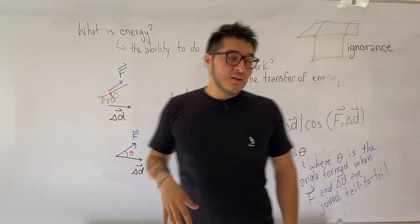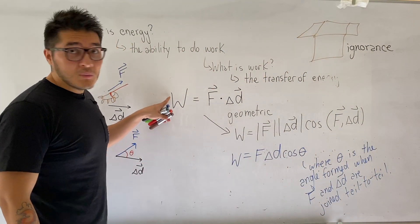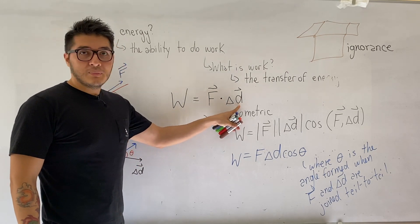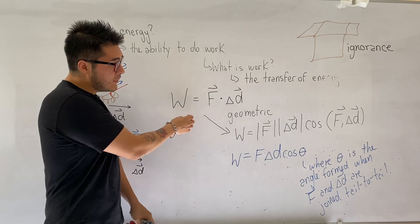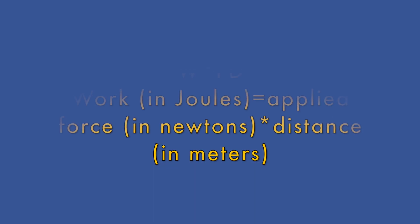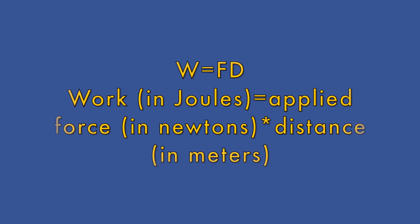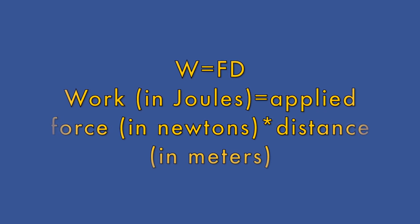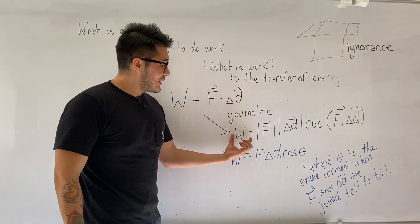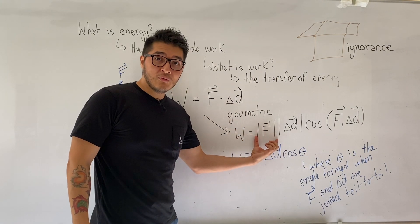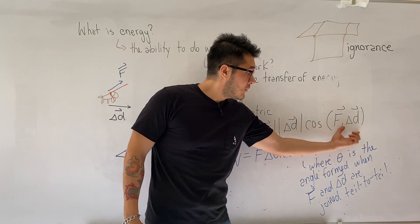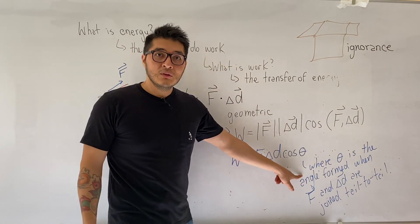Then we went on to introduce the formula to calculate work: work is force dot displacement. In this course we only need to focus on the geometrical way, so to calculate geometrically, we calculate it as the magnitude of the force times the magnitude of the displacement times cosine of the angle formed when the two are joined tail to tail.